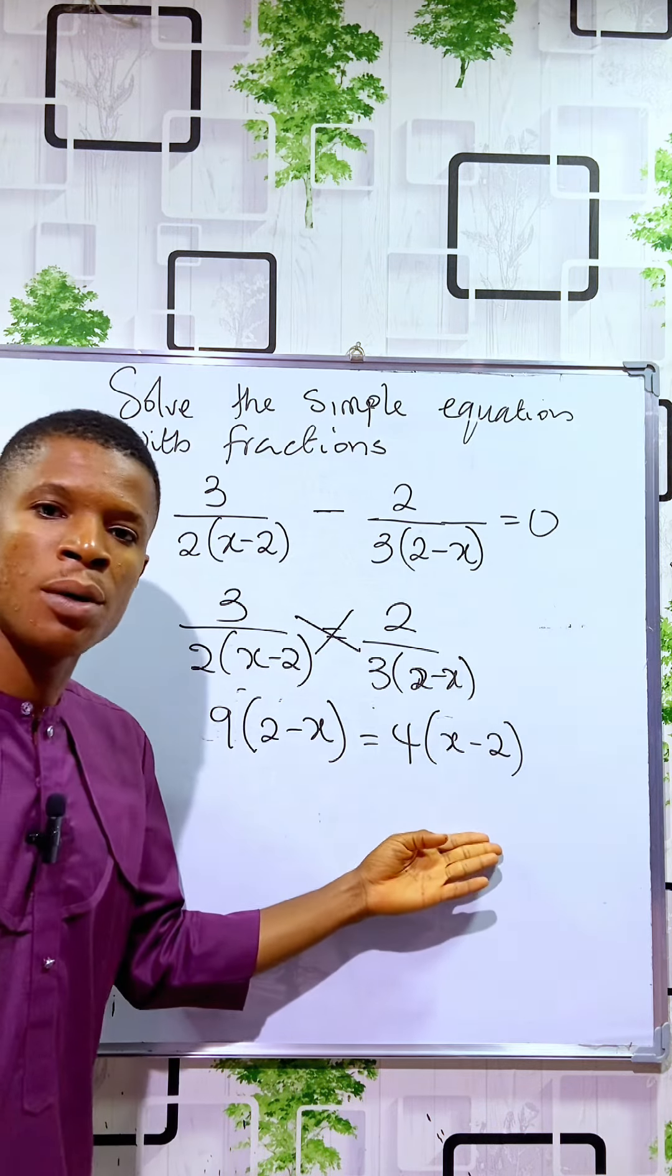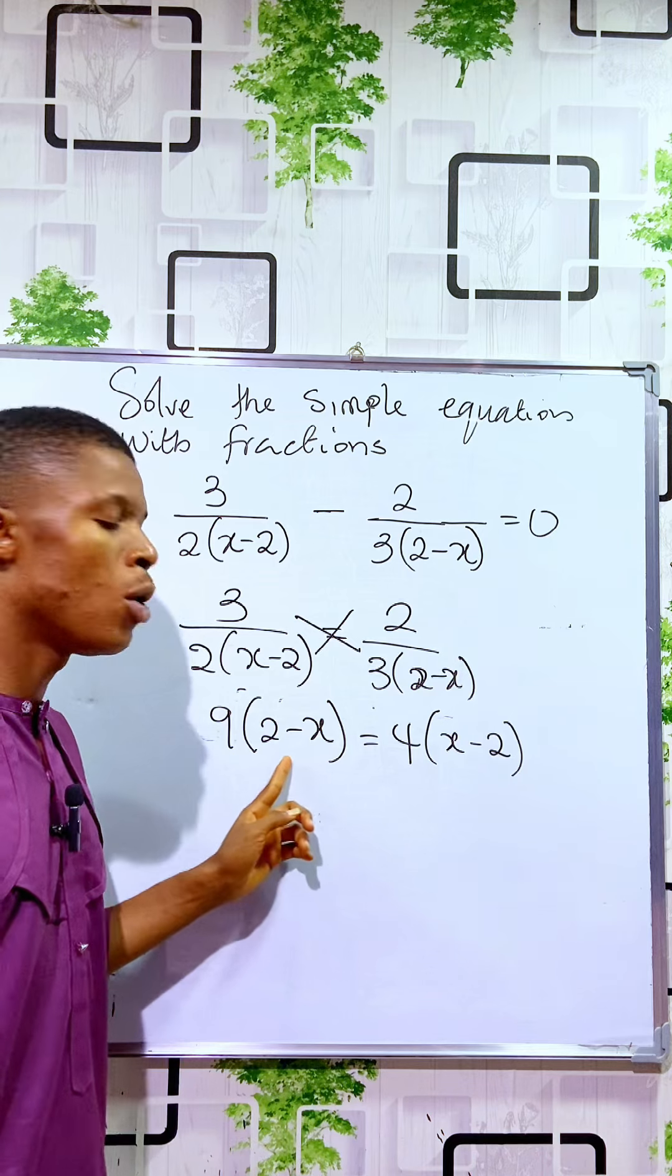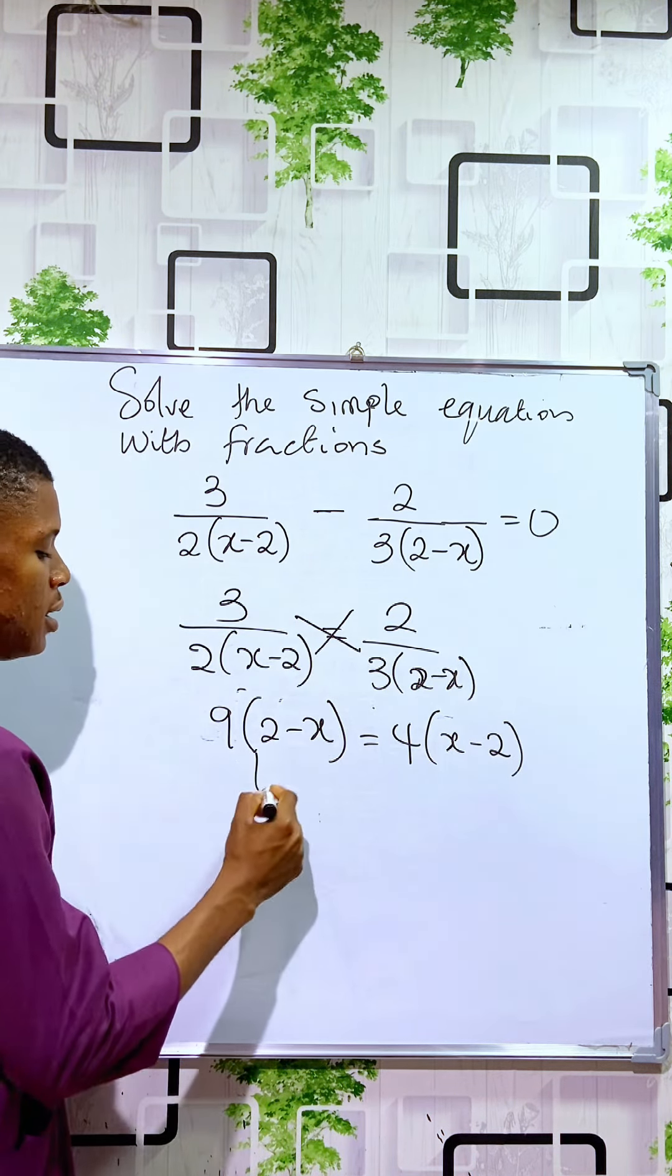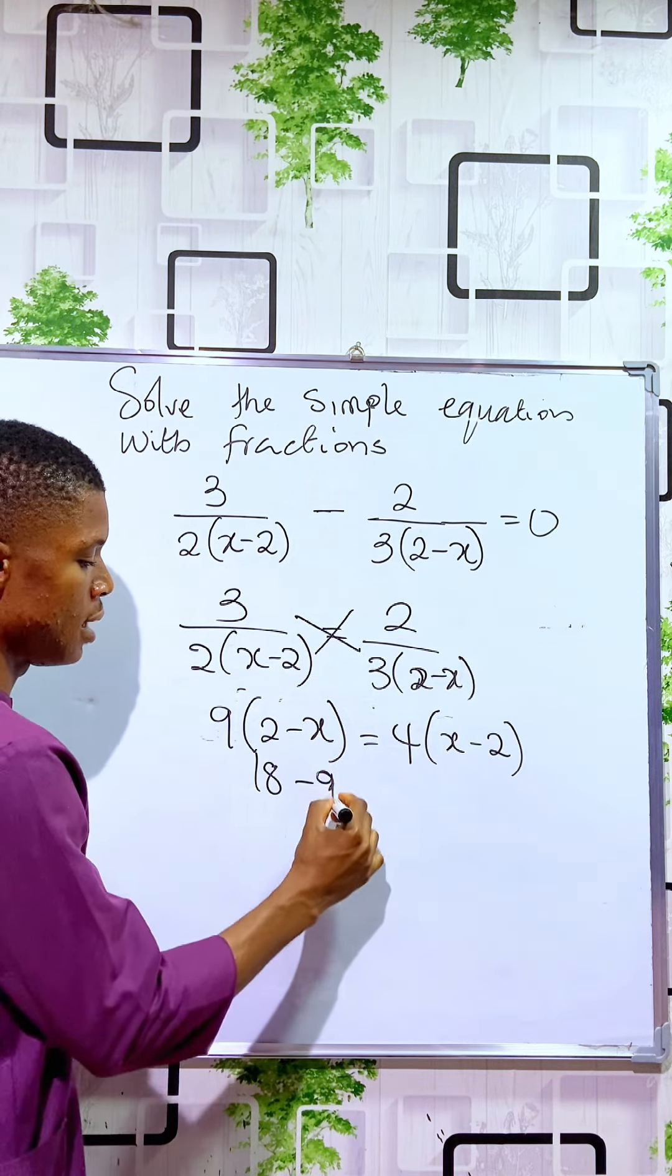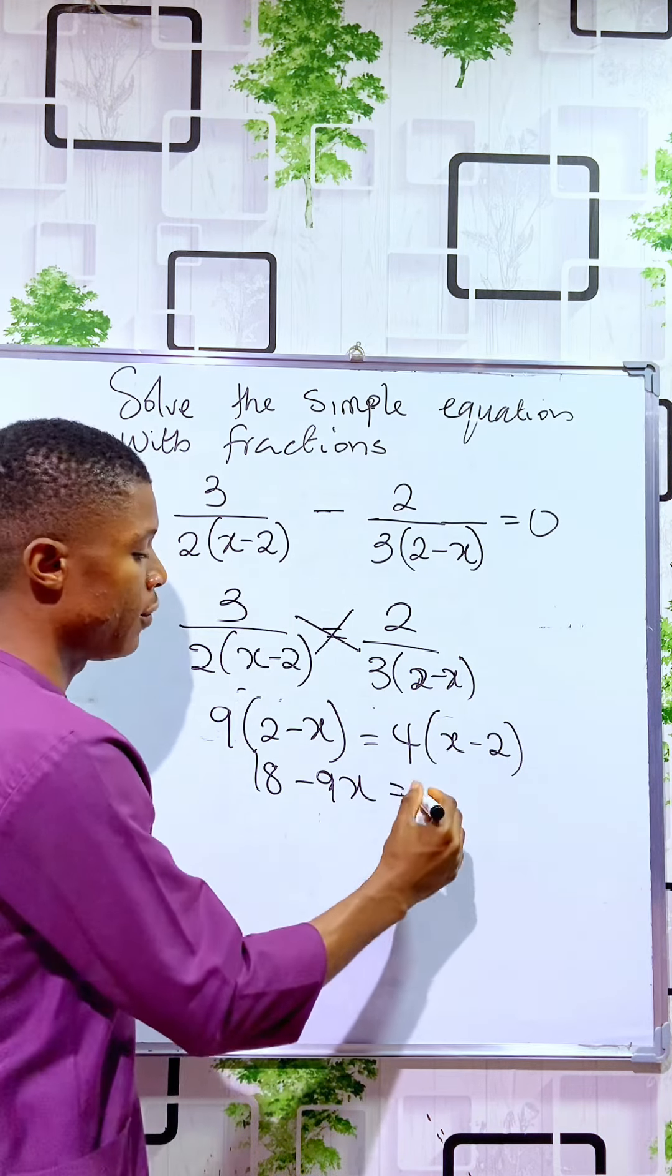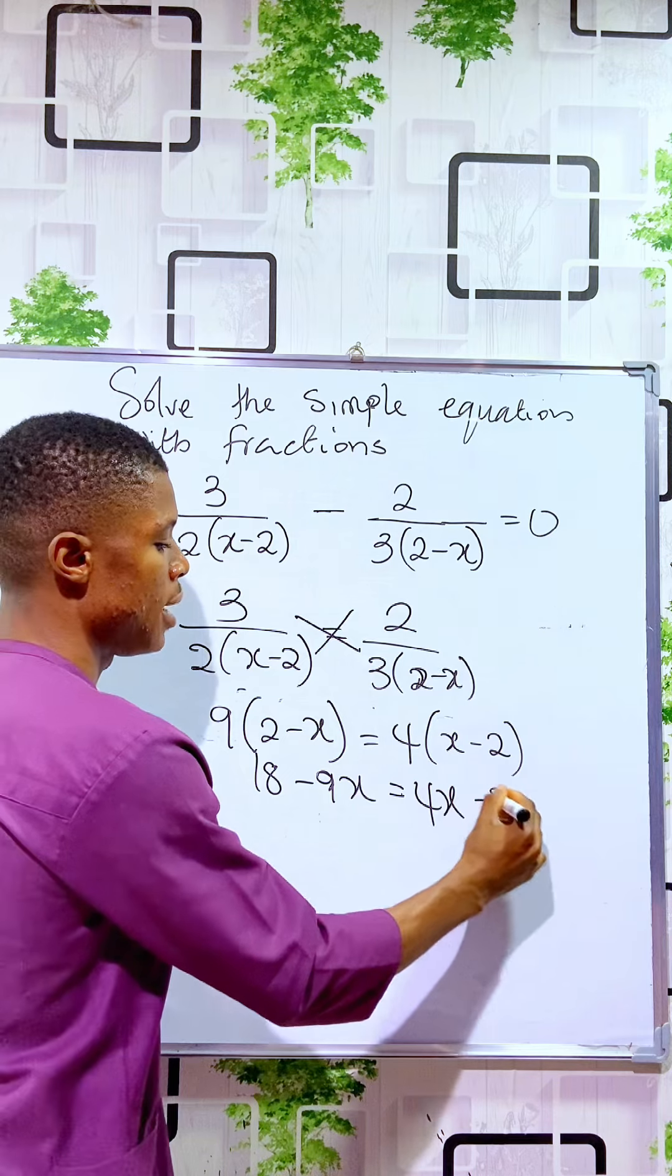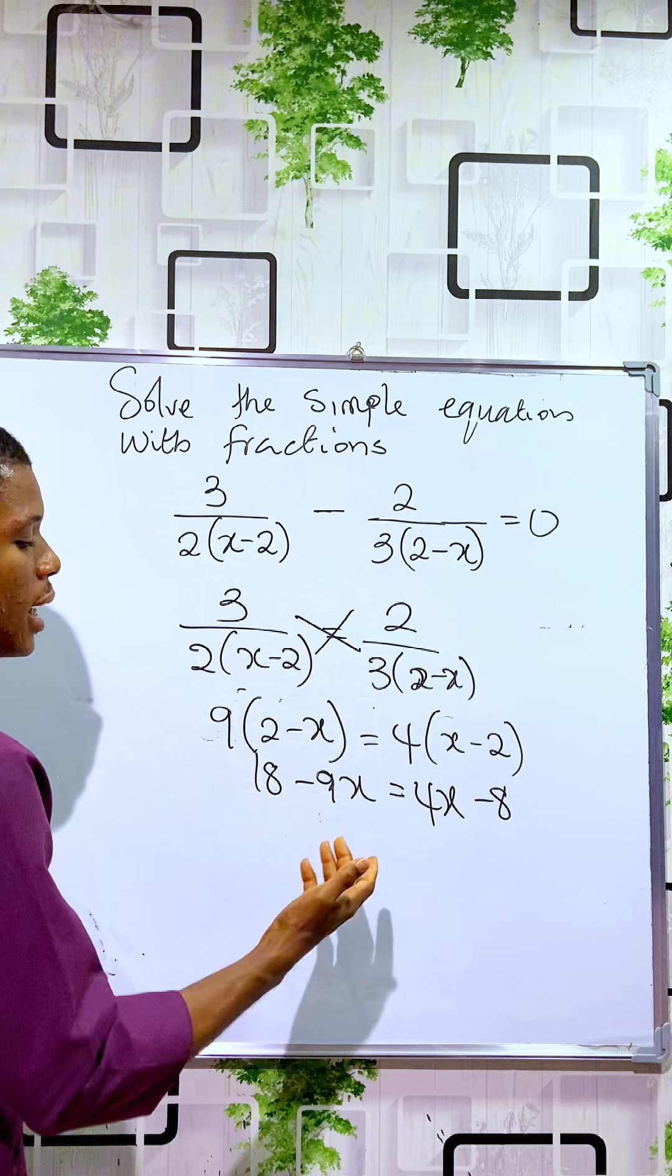Then the next thing is to open up the bracket. To open up the bracket you use these numbers to multiply everything in the bracket. So 9 times 2 is 18, 9 times minus x is minus 9x is equal to 4 times x is 4x, 4 times minus 2 is minus 8. So here we collect like terms.